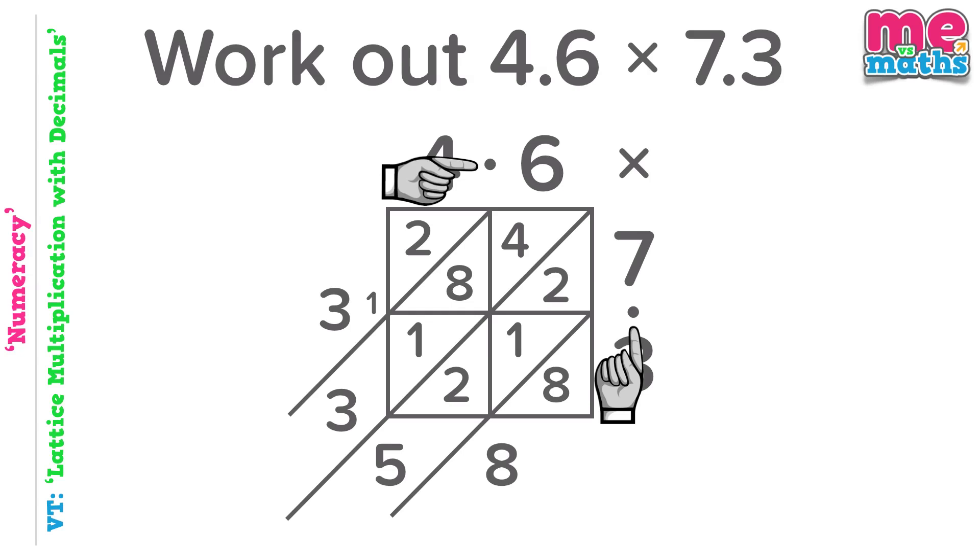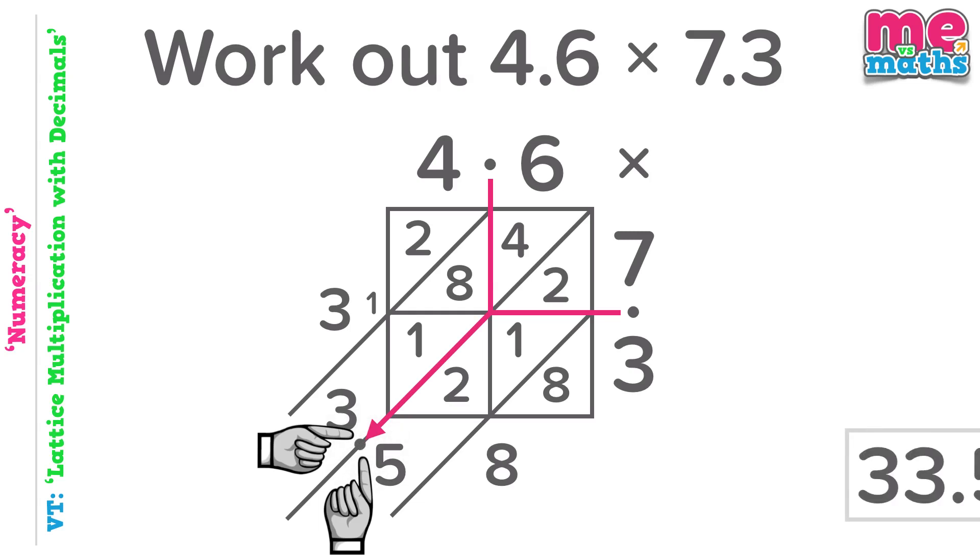Just as before we're going to go down from the top and across from the side until your fingers meet. Where they meet, follow that diagonal line down to the bottom and this is where our point will go. So an answer this time of 33.58, and again check it makes sense. 4.6 pretty close to 5, 7.3 roughly 7, 5 times 7 is 35. Our answer should be about that size and again sure enough it is.